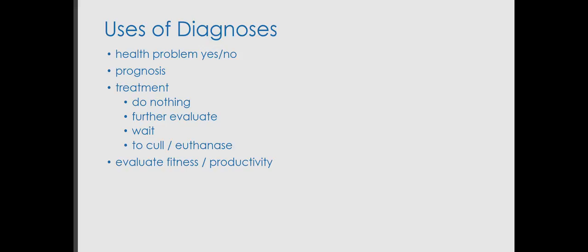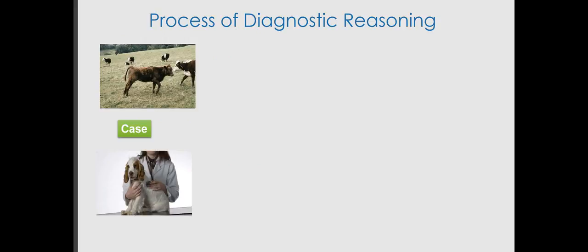As I had emphasized in the video on sensitivity and specificity, the uses of diagnosis range quite widely. There are quite a number of objectives, one of them being whether I just want to determine whether there is a health problem or not. I may want to come up with a prognostic diagnosis, make decisions about treatment, or evaluate the fitness or productivity of an animal. It is quite useful to think about the different factors which influence the process of diagnostic reasoning.